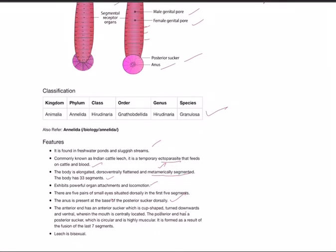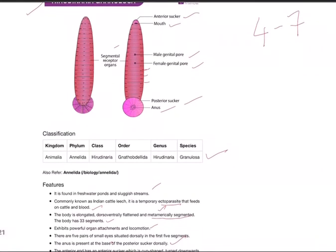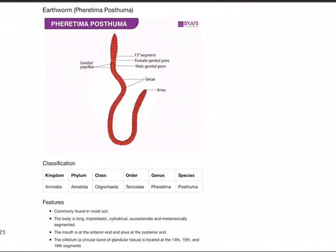The anus is present at the base of the posterior sucker dorsally. For any animal, remember there is a dorsal side, ventral side, anterior side, and posterior side. The anterior end has an anterior sucker which is cup-shaped, and the posterior end has a posterior sucker which is circular and highly muscular. It's formed by fusion of the last seven segments. Leech is bisexual.